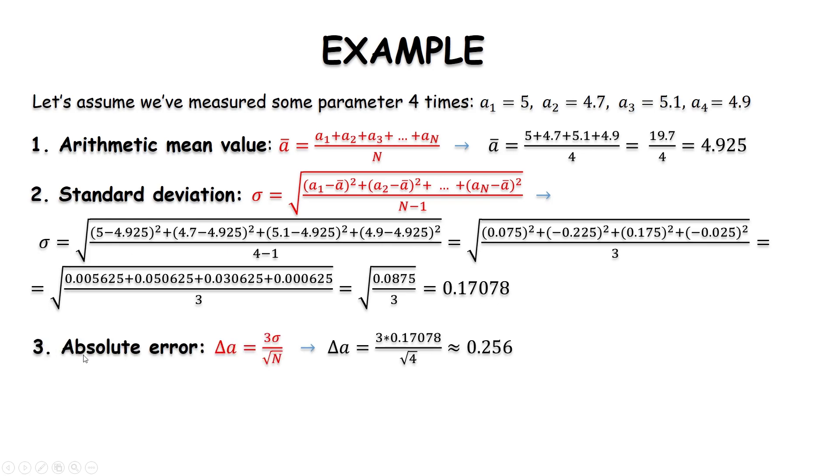Now, we will calculate the absolute error. Using this equation, we multiply 3 by the standard deviation and divide by square root 4. And the answer is about 0.256.